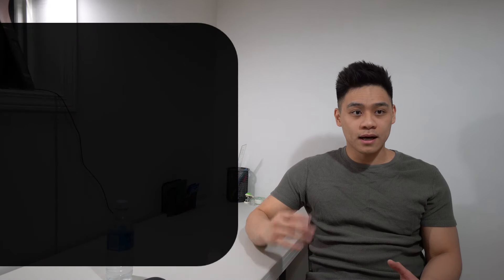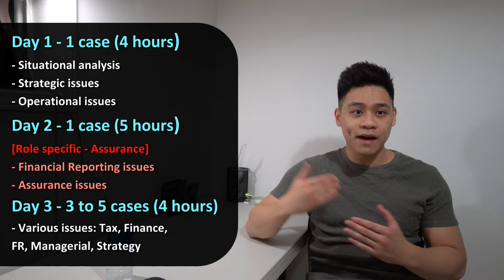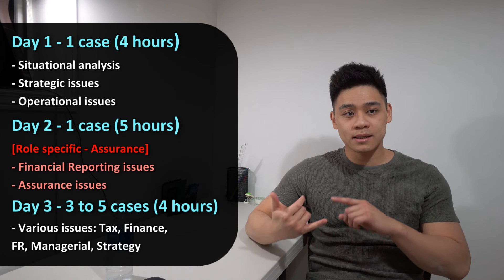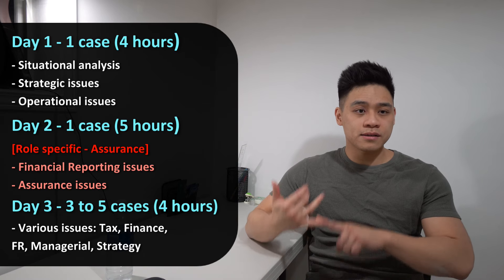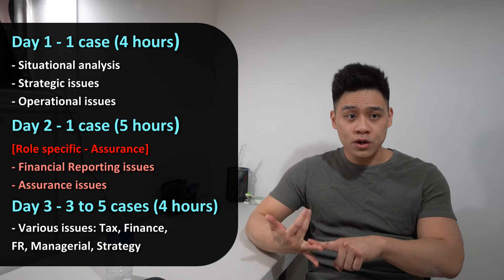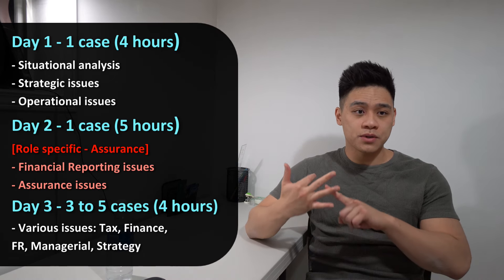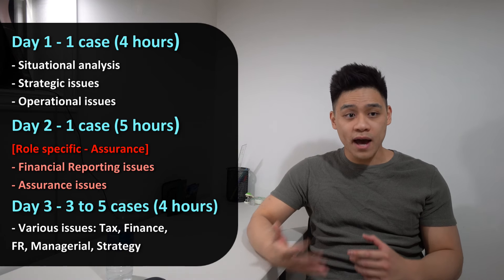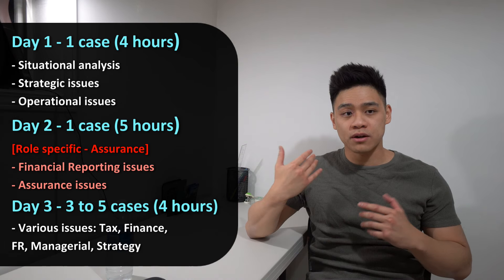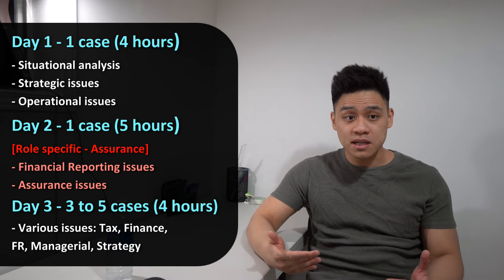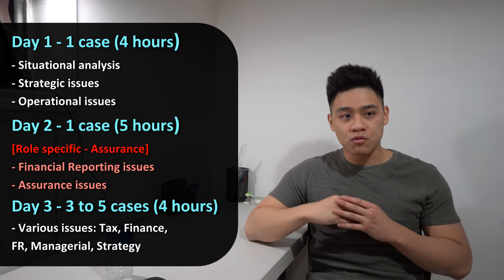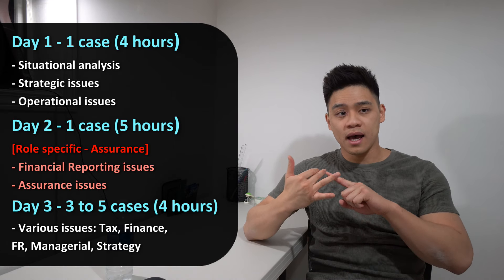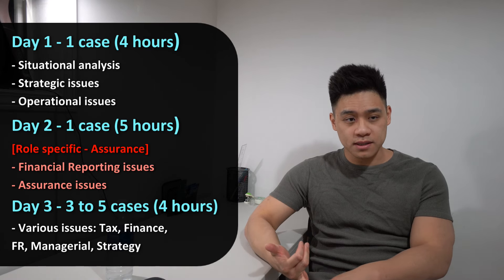For day one, it's four hours, so roughly average 20 minutes per AO. You can expect one situational analysis, around four strategic issues, and roughly three operational issues. For day two, it's five hours, so you can expect roughly 15 minutes per AO on average, with roughly six financial reporting issues and roughly seven assurance issues.